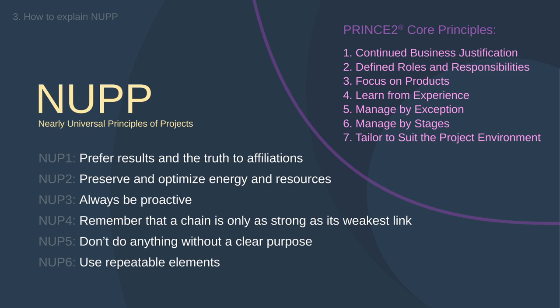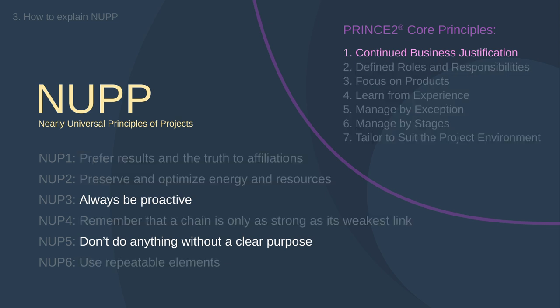Now let's compare NOOP principles with Prince2 principles. One obvious difference is that NOOP principles are more general and high-level, while Prince2 principles are mainly designed to support how Prince2 works. The first Prince2 principle — continued business justification — is basically one aspect of the fifth NOOP: don't do anything without a clear purpose. The project's justification can be derived from that fifth NOOP, and the idea of not continuing a project that loses its justification is about being proactive — the third NOOP.